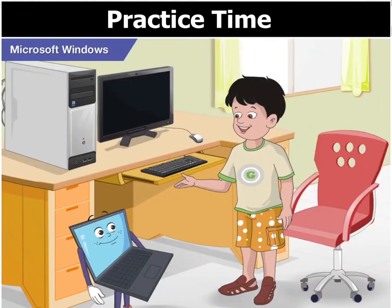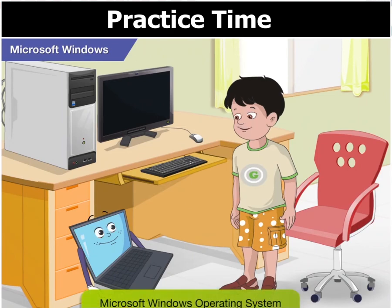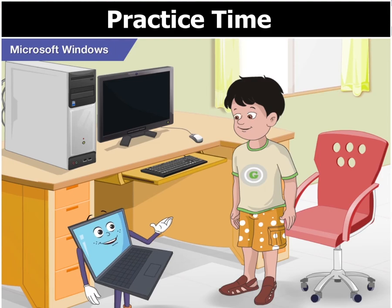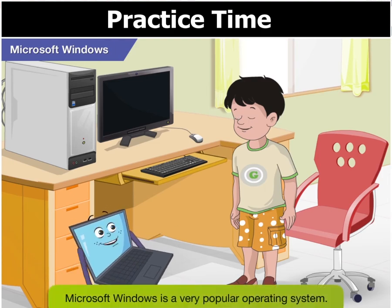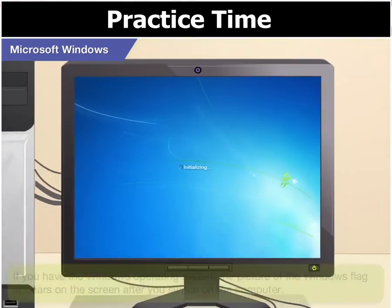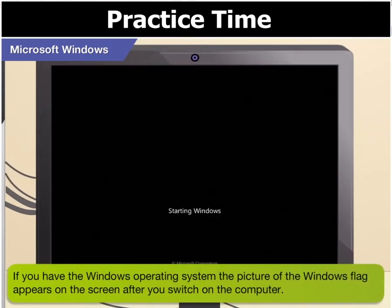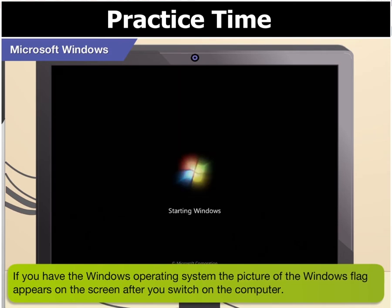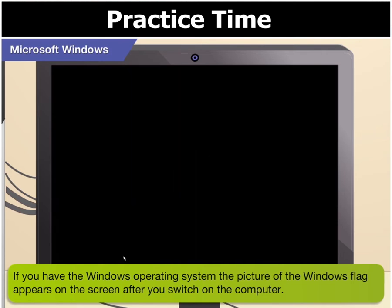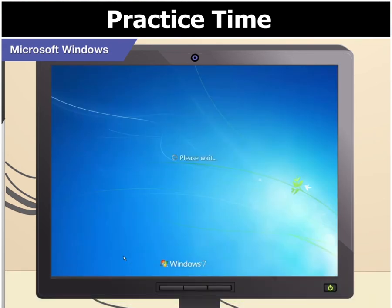Google, tell me more about Microsoft Windows. I think it is very popular. You are right. Microsoft Windows is a very popular operating system. If you have the Windows operating system, the picture of the Windows flag appears on the screen after you switch on the computer. Here, you are seeing the opening screen for Windows 7. You have seen this earlier, haven't you?